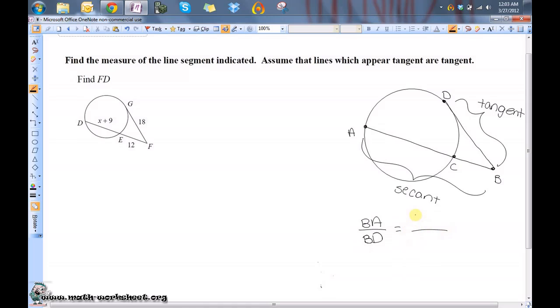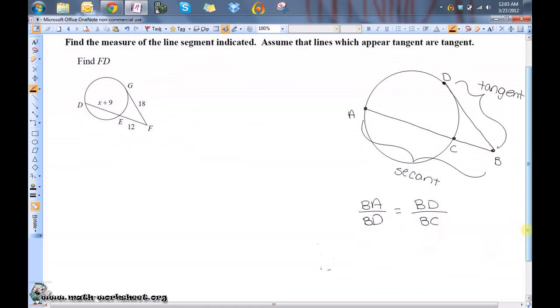That's going to equal the ratio of the tangent's length over just this small part here, the part of the secant that is outside of the circle. That's always true as long as the secant and the tangent intersect outside of the circle. This is what is known as the geometric mean because the two means are equal to each other.